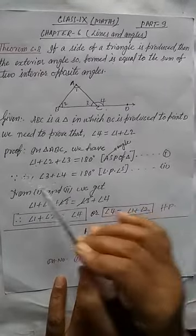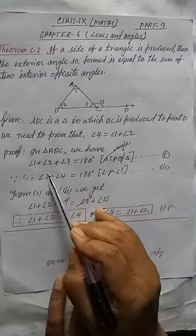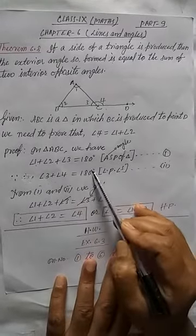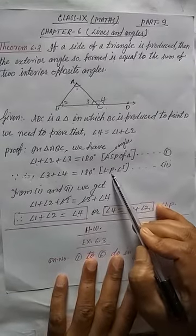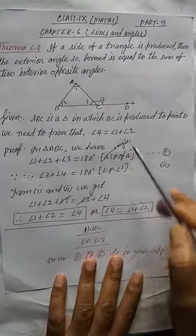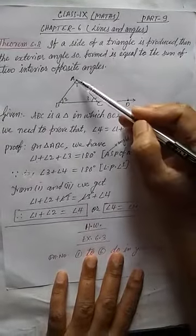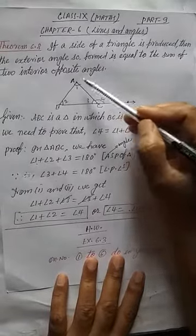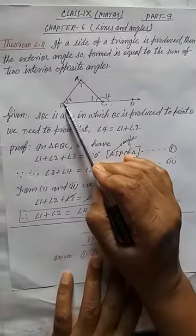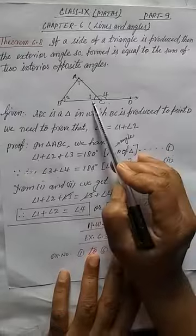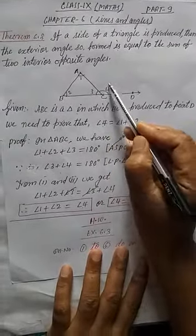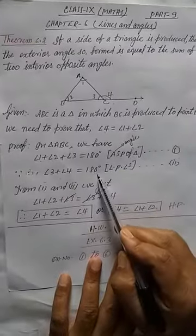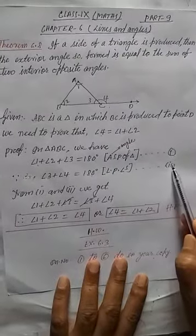Now, in the second point, angle 3 plus angle 4 is equal to 180 degrees. How? This is the linear pair of angles because here this AC is the ray that stands on line BD. So that's why angle 3 plus angle 4. In this way, here linear pair. So we can write this one. And this equation is second.